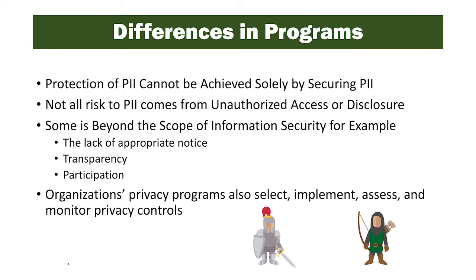There are differences in the programs, though. Protection of PII cannot be achieved solely by securing PII. Not all risk to PII comes from unauthorized access or disclosure — some is beyond the scope of information security. For example, the lack of appropriate notice, transparency, and participation requirements are not normally covered in information security programs. Organizations' privacy programs also select, implement, assess, and monitor privacy controls, and these steps can often be integrated with the RMF the same way security controls are.